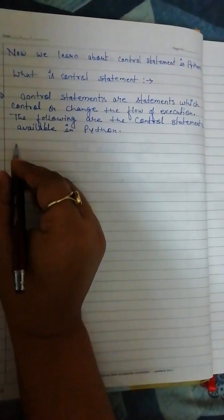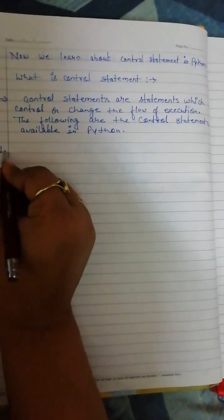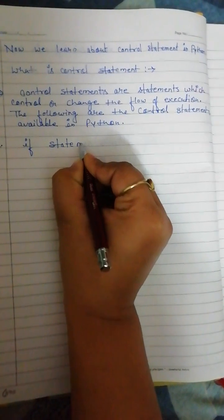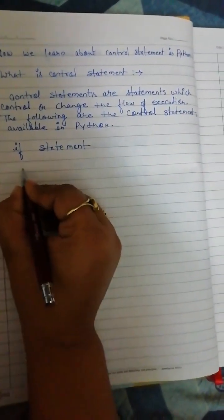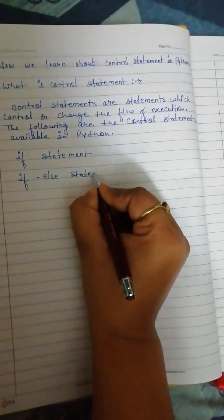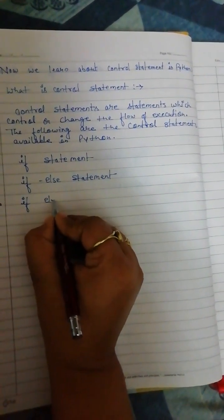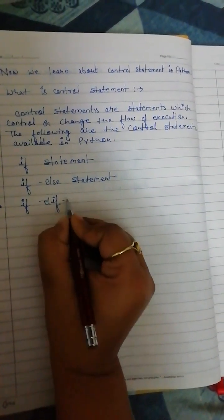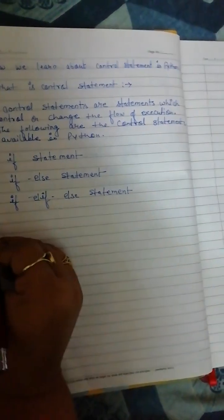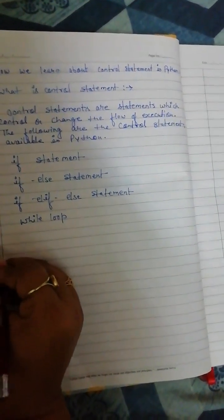Now we are learning about which types of control statements are available in Python. First is if statement, second is if-else statement, fourth is while loop, and fifth is for loop.